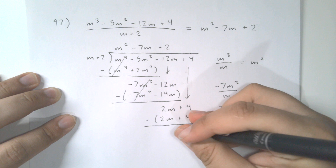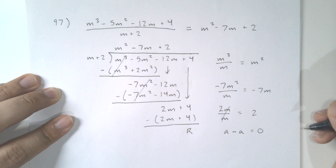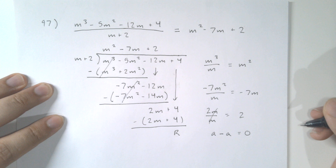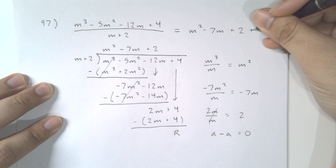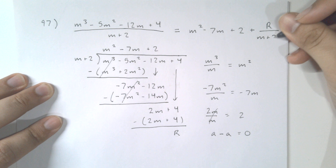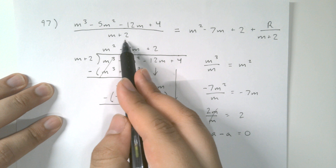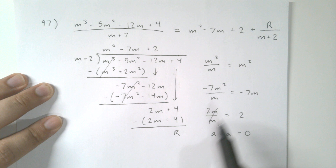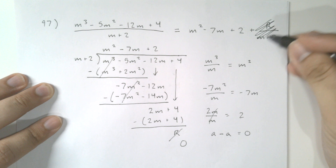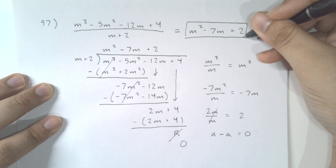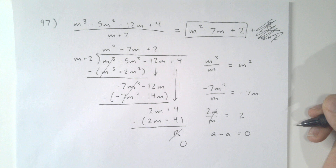Something to note: if for whatever reason the result is not zero — say we have some remainder r — when formatting your answer you write your remainder as plus r divided by your divisor, in this case m + 2. The remainder should just be a number, no variables. Since our remainder was 0, it goes away entirely and we just have m² - 7m + 2 as our final answer. This is polynomial long division.